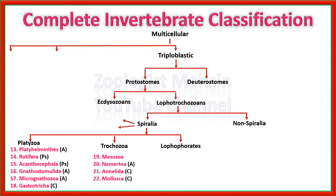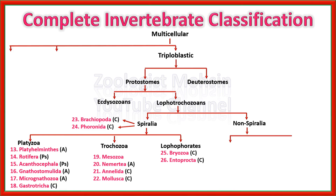There are two phyla not included among the three clades of Spiralians — although they are Spiralians, they are neither Platyzoa, Trochozoa, nor Lophophorates — and those are Brachiopoda and Phoronida. Both Brachiopoda and Phoronida are coelomate with a true body cavity. Lophophorates include Bryozoa and Entoprocta, and both Entoprocta and Bryozoa are true coelomates. Among the non-Spiralians, which do not have spiral cleavage, are Cyclophora and Chaetognatha, and both are coelomate.